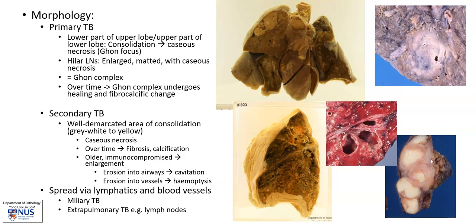Here is a picture showing some enlarged, matted lymph nodes with these geographic, pale, whitish or yellowish areas of caseous necrosis.